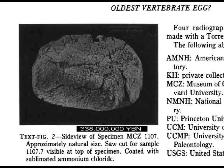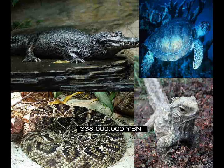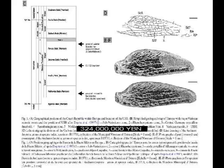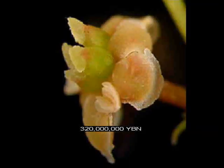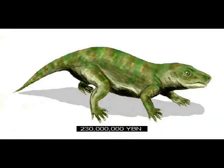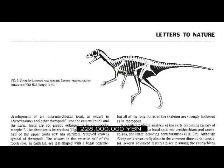The amniota — ancestor of reptiles, mammals, and birds. Reptiles. First flying animal: arthropod insect. First flowering plant: fruits, nuts, vegetables. Warm-blooded hair-growing animal.